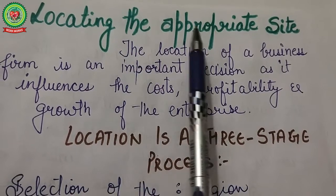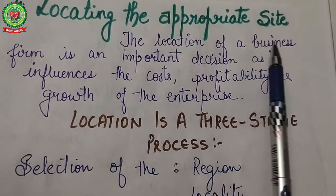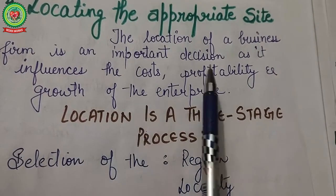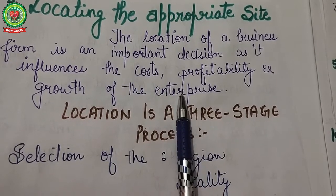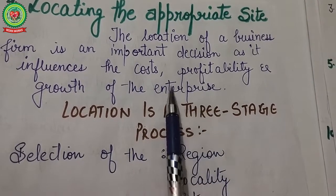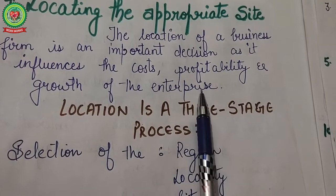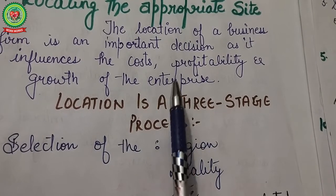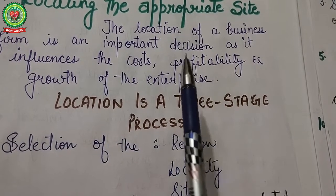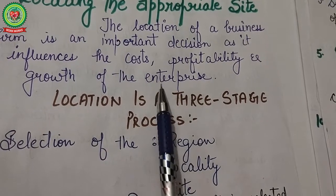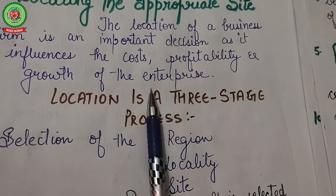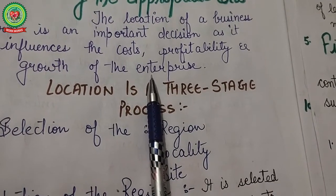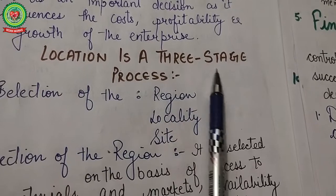The next step is locating the appropriate site. The location of the business firm is an important decision as it influences cost, profitability, and growth of the enterprise. Once a site is selected, it is very difficult to change it, and an unfavorable location may restrict growth and lead to higher costs. The objective of the location decision is to find the optimum location so that per-unit cost of production and distribution is the lowest possible.